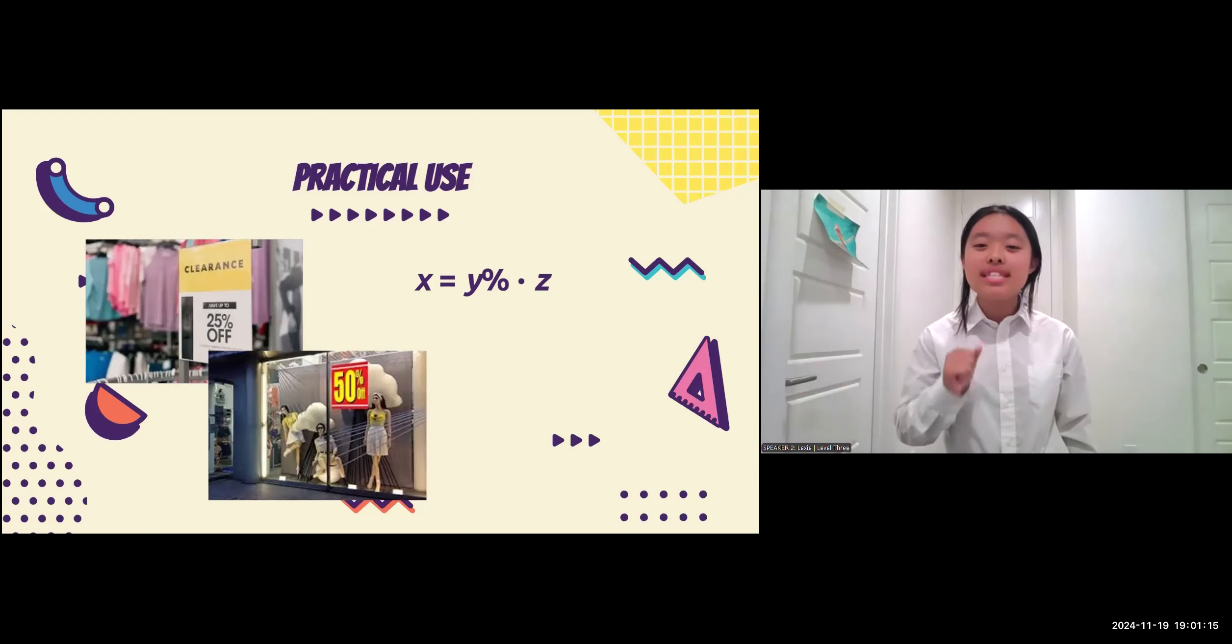On screen here, you will see an equation that I like to use whenever I'm trying to figure out the price of something that has been discounted at the store. x equals y percent times z. In these pictures here, you'll see that these items are priced 25 and 50 percent off. Let us use the top picture as an example.